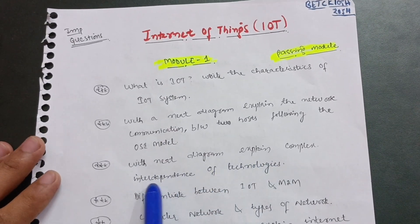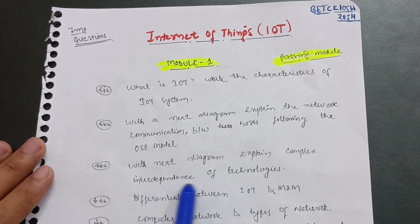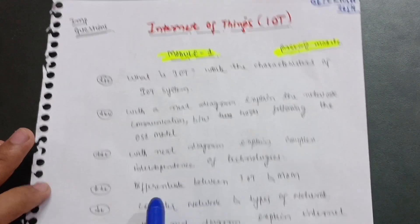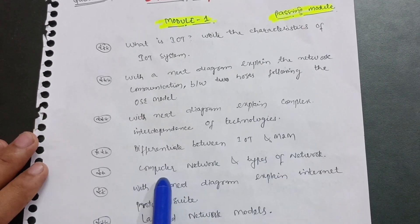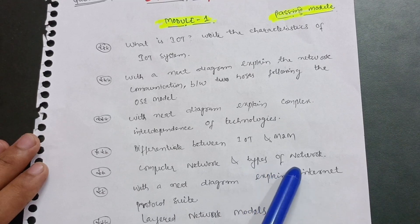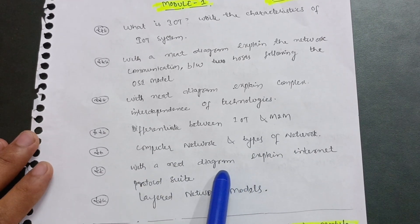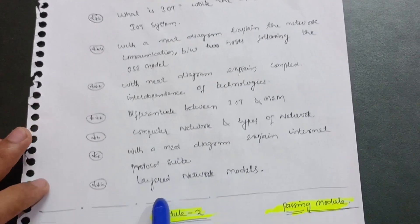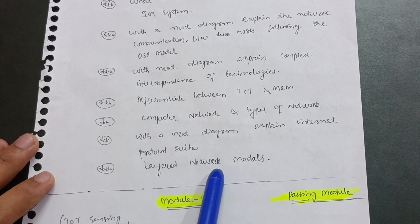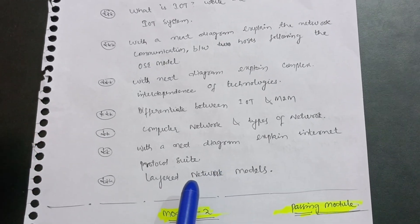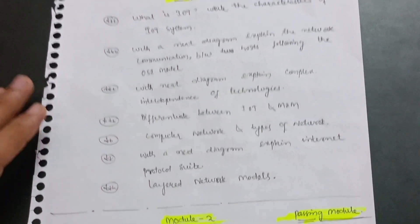With a neat diagram, explain the complex interdependence of technologies as per Silver's concept. Differentiate between IoT and M2M. The next important question covers computer networks and types of networks, and with a neat diagram explain the Internet Protocol Suite. You should also have some knowledge about layered network models. This much content is enough in Module 1 — covering this portion you will easily get 20 marks.